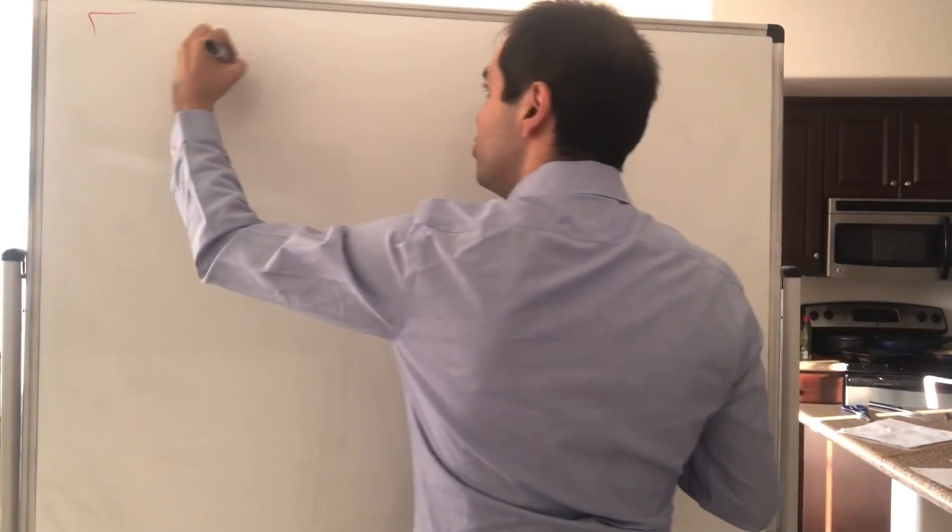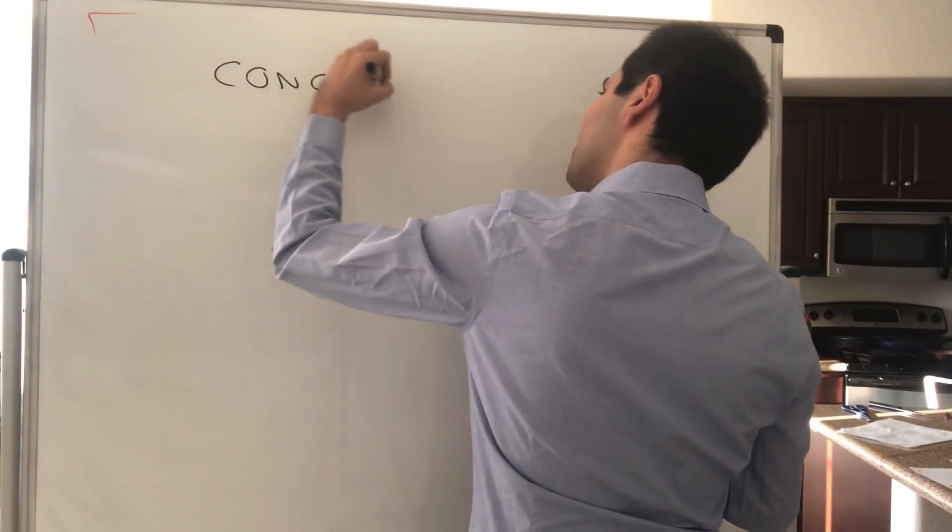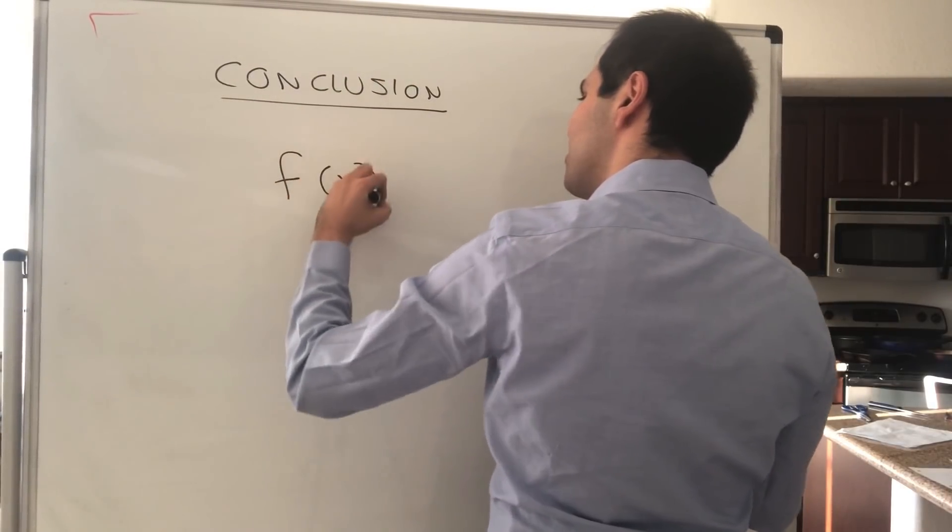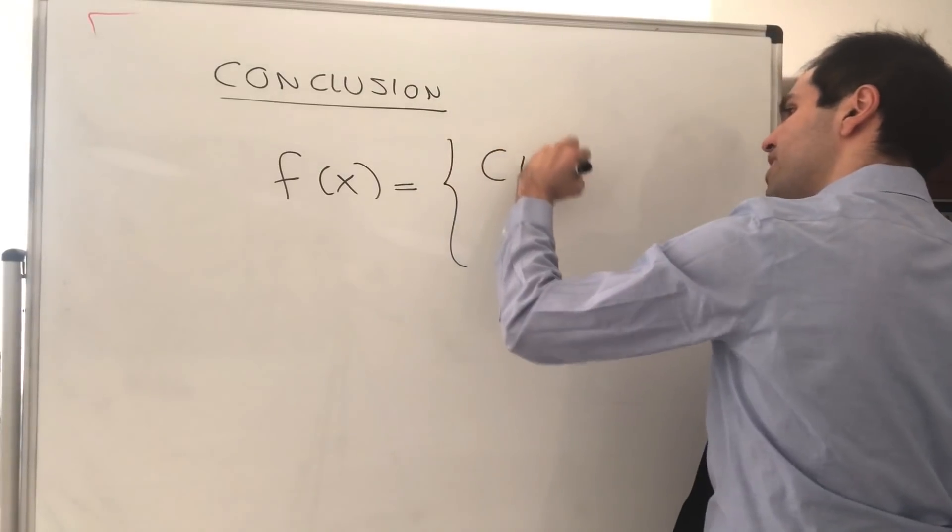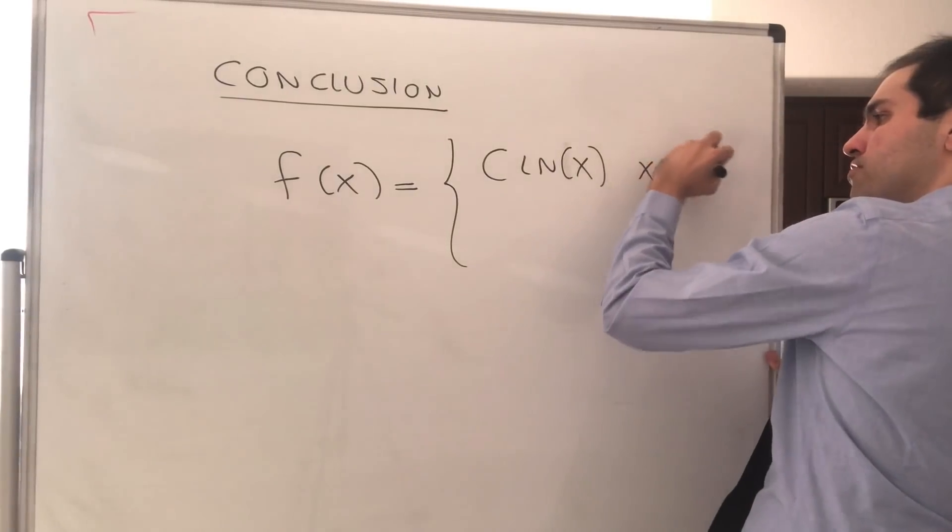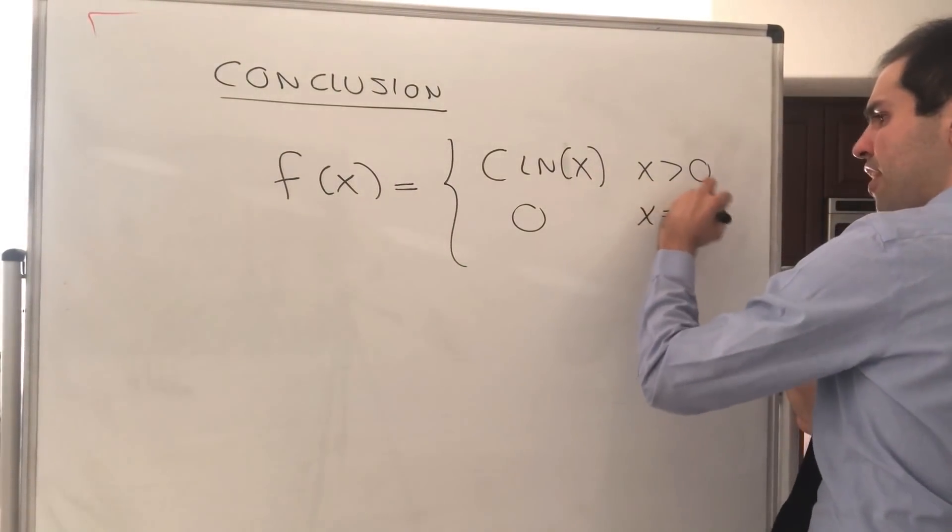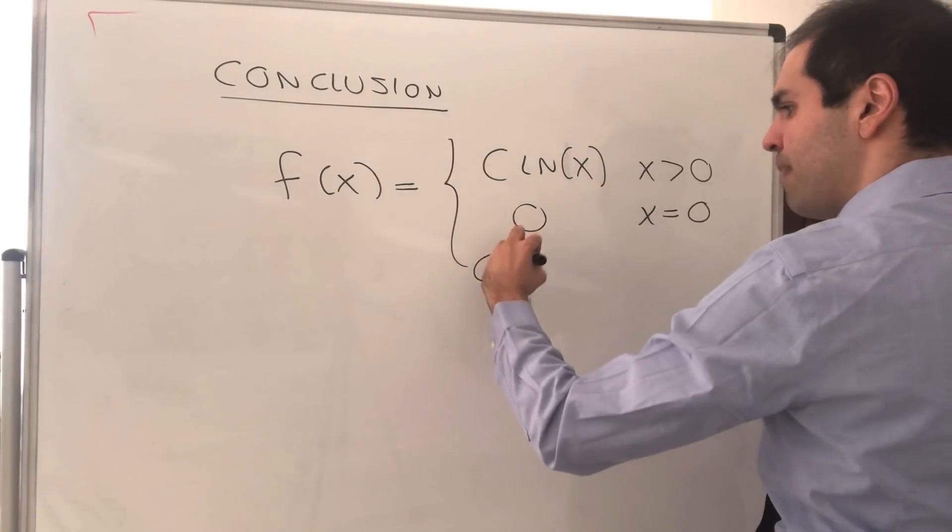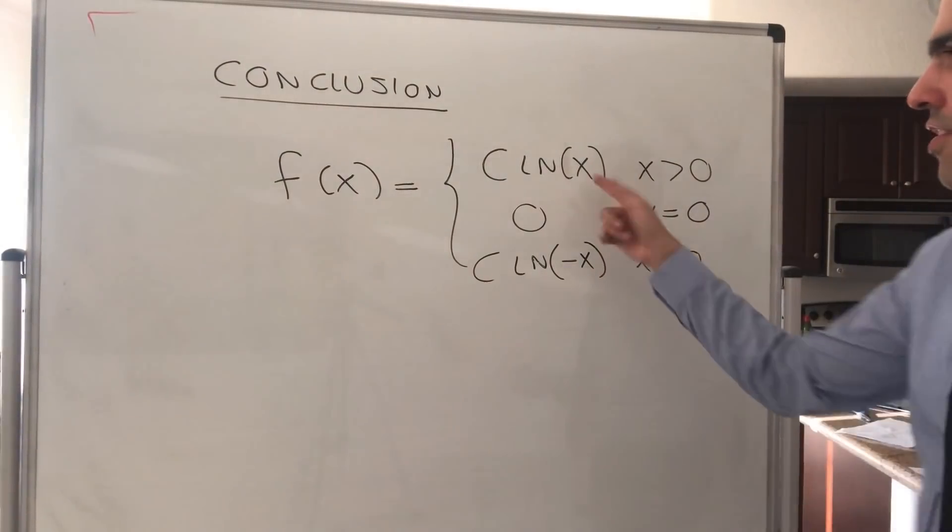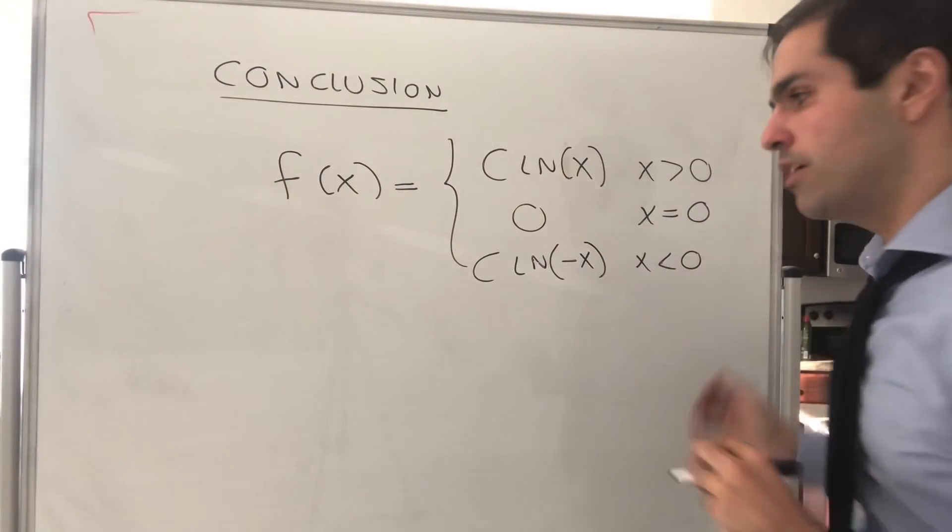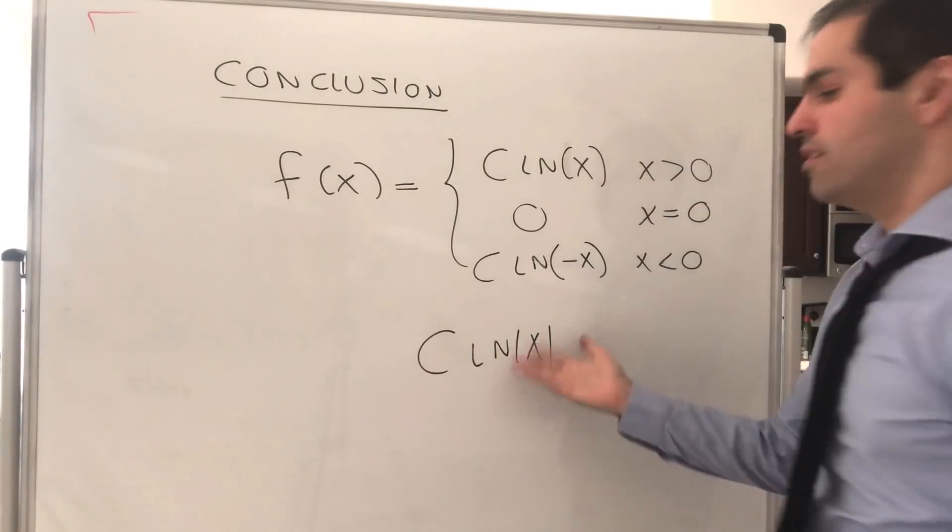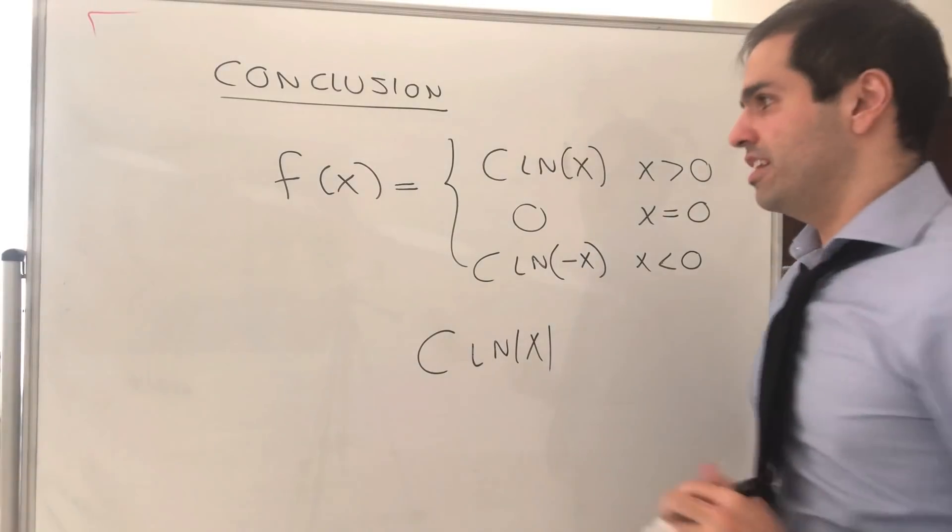If you want the grand conclusion, we basically get f of x equals c times ln of x if x is positive, 0 if x is 0, and c times ln of minus x if x is negative, which you can conveniently abbreviate as simply c times ln of absolute value of x, except you define it to be 0 at 0.